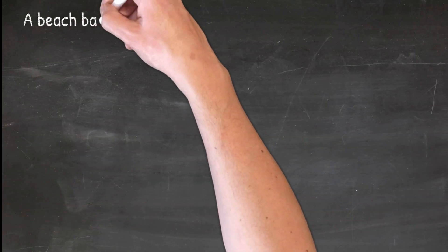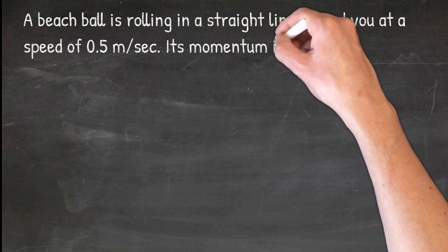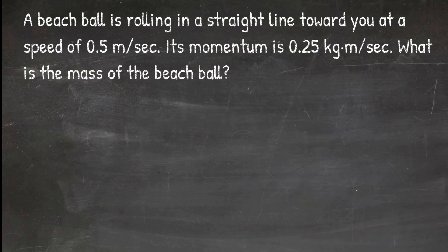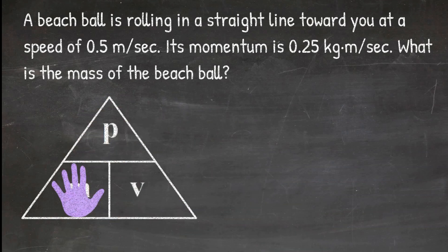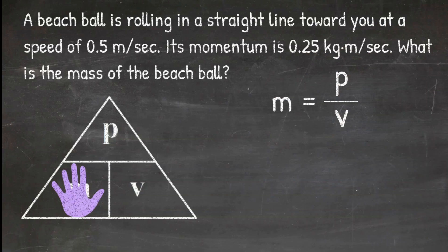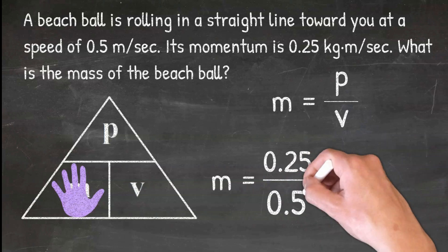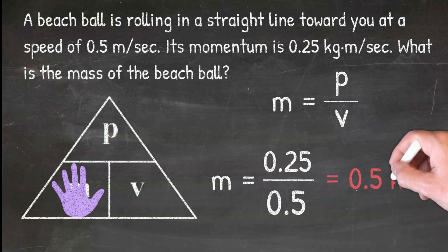In the next example, the question says: a beach ball is rolling toward you at a speed of 0.5 meters per second. Its momentum is 0.25 kilograms times meters per second. What is the mass of the beach ball? I cover up the letter m in my triangle, which tells me to do momentum divided by velocity. So m equals p divided by v: I plug in 0.25 divided by 0.5, which gives me an answer of 0.5 kilograms.